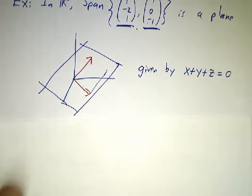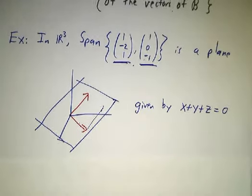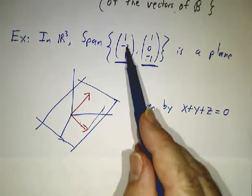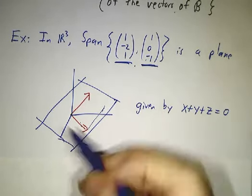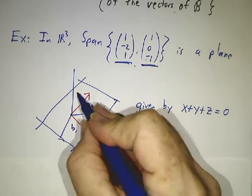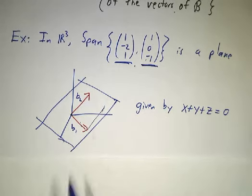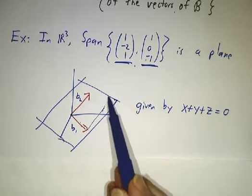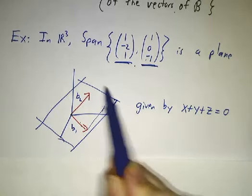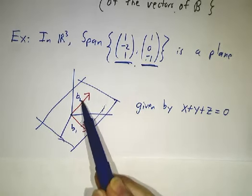So for example, if we're in R³, you might be interested in the span of the vectors (1, -2, 1) and (1, 0, 1). If this is the first vector, then this is the second vector. It's everything that you get by taking a multiple of b1 plus a multiple of b2. That gives you all points in the plane that contains b1 and b2.